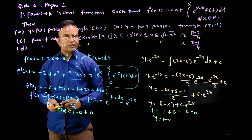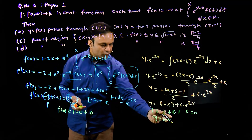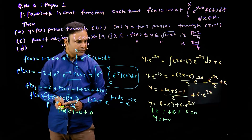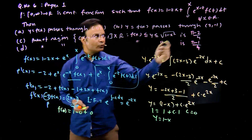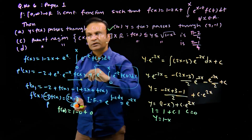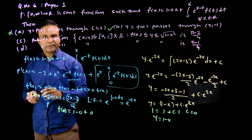Is the function passing through point (1, 2)? No — f(1) = 0, not 2, so option A is wrong. However, f(2) = 1 - 2 = -1, so the function passes through (2, -1), making option B correct.